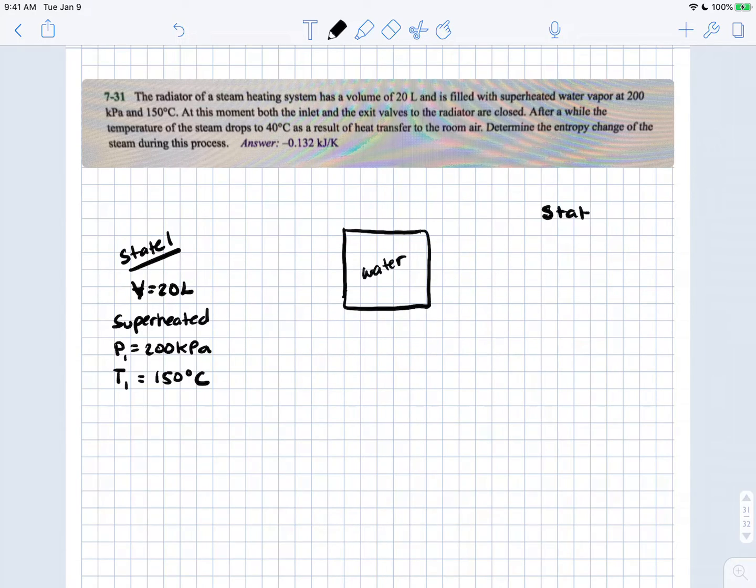We then have state 2. We know we have heat transfer to the room, and at state 2 the temperature is 40 degrees Celsius.